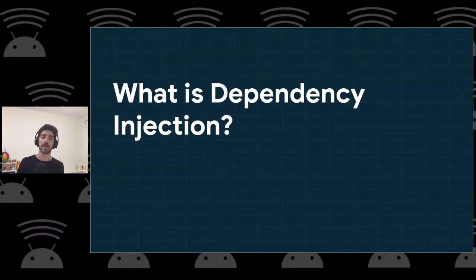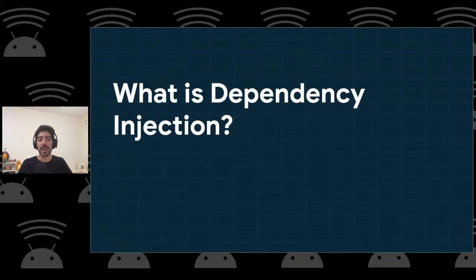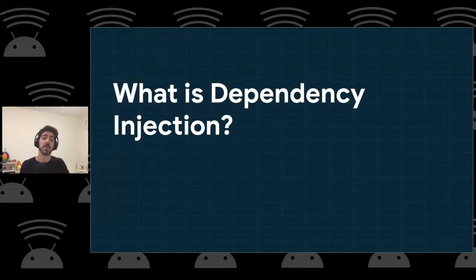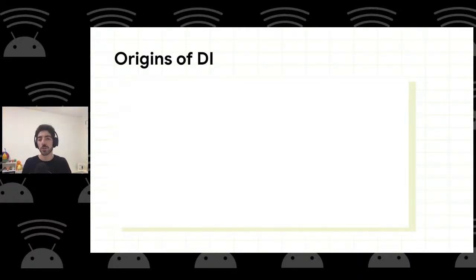Just to recap — it's worth explaining what dependency injection is since not everyone may know it. We can define dependency injection as a design pattern where a class receives its dependencies instead of creating those dependencies itself. It's a pretty old, well-recognized pattern used in programming in general, not only Android.